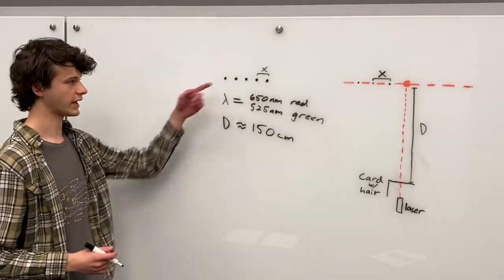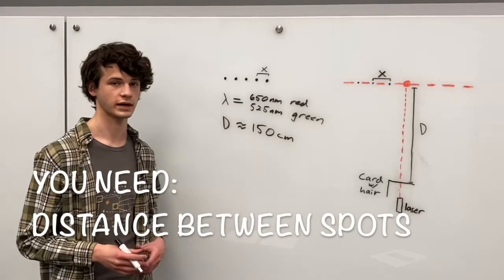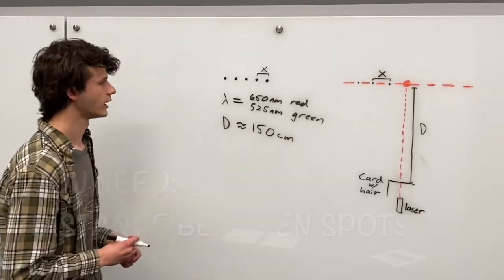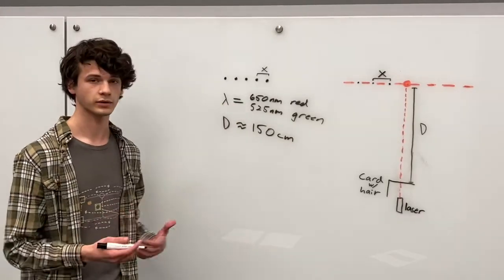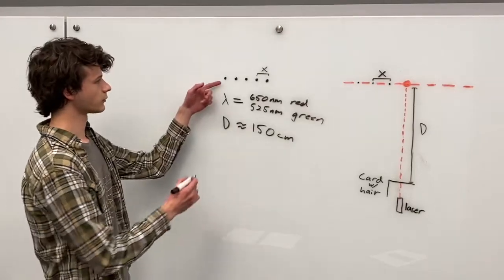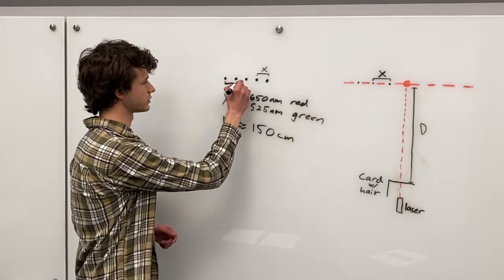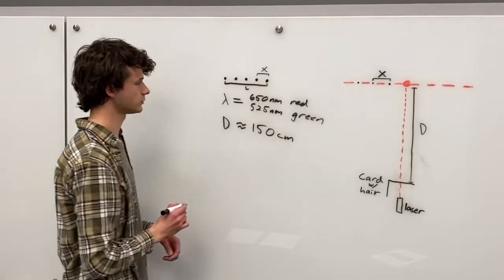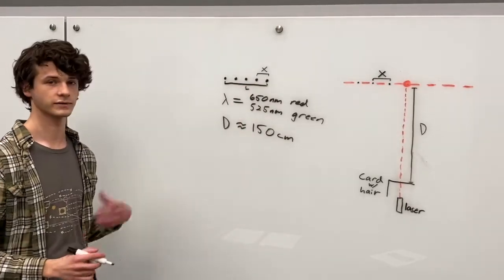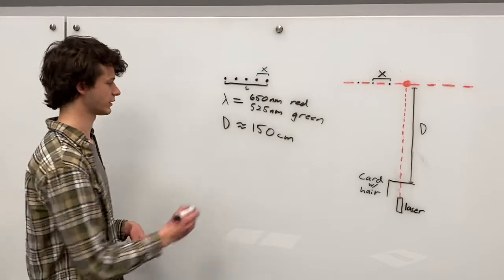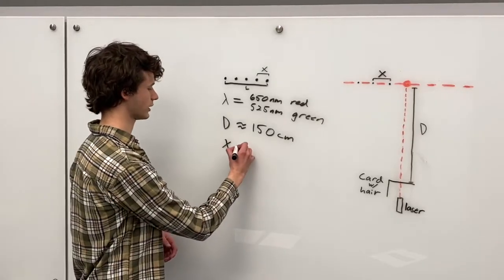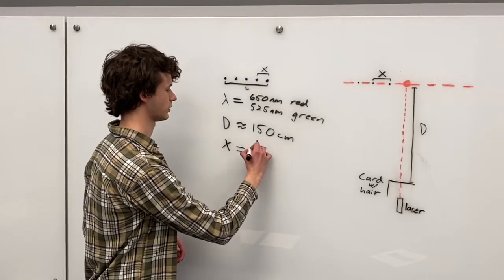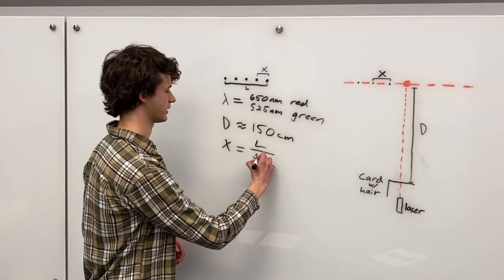And finally we need to find X, the distance between two of the dots on your card. And so to get a more accurate measure, first measure the distance between the first dot and the last dot. I'll call that L. Then you're going to divide by the number of spaces that you have. So here X is going to be L divided by spaces.